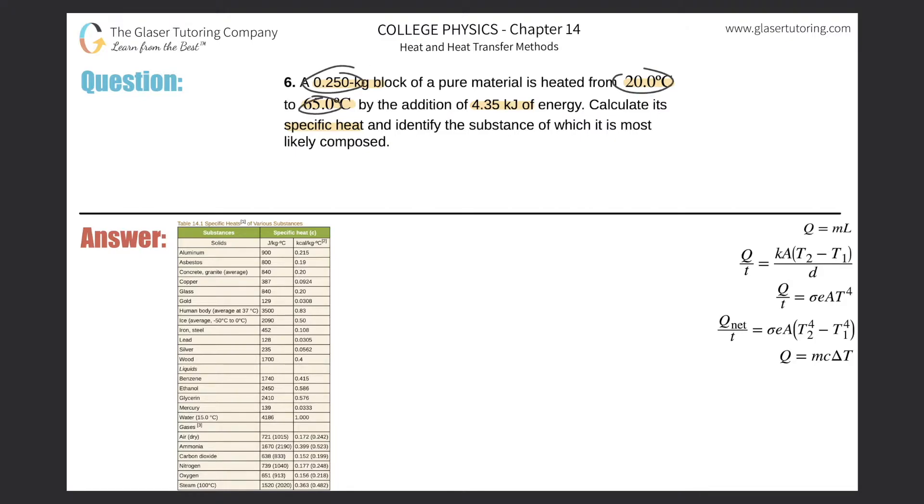So basically, mass, change in temperature, energy, and specific heat—how are they related? Via this formula over here on the right-hand side. Check out my general video on calorimetry; it might also help in terms of just identifying these things.